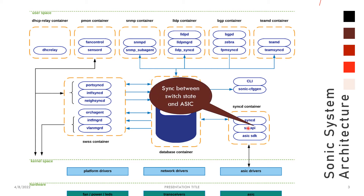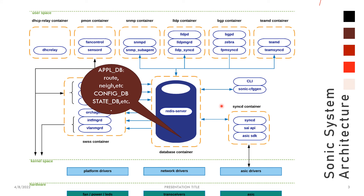As discussed, SyncD communicates between the switch state and the ASIC driver using the SAI API, making it portable to any hardware driver supported by SAI. Next we have the database container, where all information from the applications is stored — mainly routing protocol data such as routes and neighbors. All configurations are stored in the config DB, states of protocols and ports are stored in the state DB, and stats are also stored in the DB. This is a Redis server, and all containers communicate to this database server to push data to the ASIC chip.